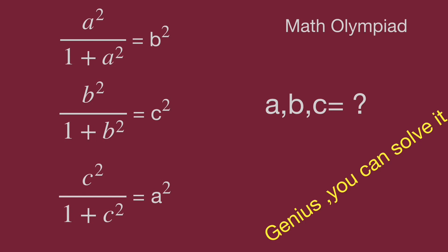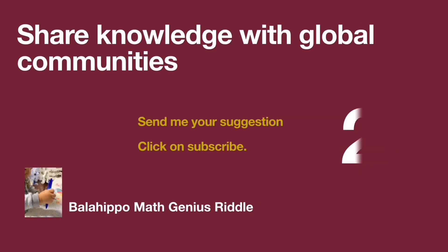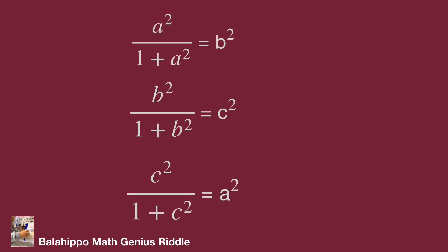Would you like to find the value yourself? Pause the video and get the answer when you are ready. Keep watching the video to find the result. Here are the three equations: a² over (1 + a²) equals b², b² over (1 + b²) equals c², and c² over (1 + c²) equals a².